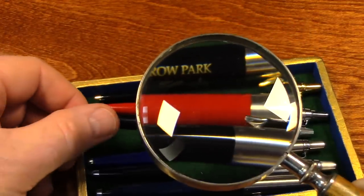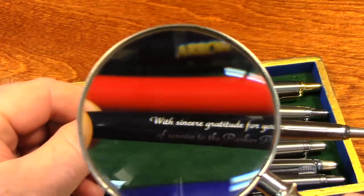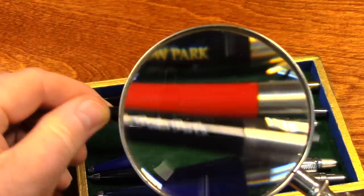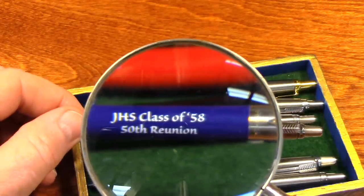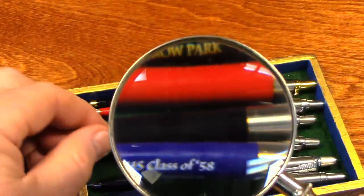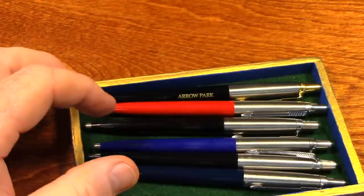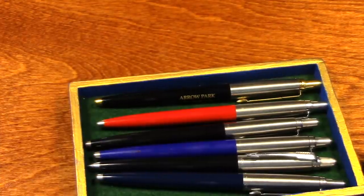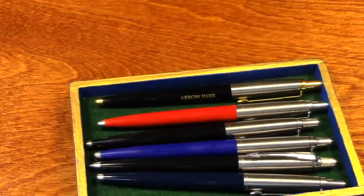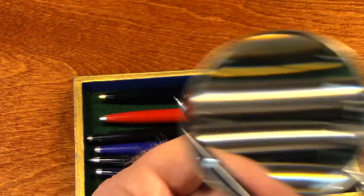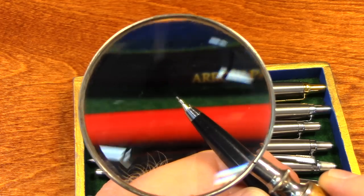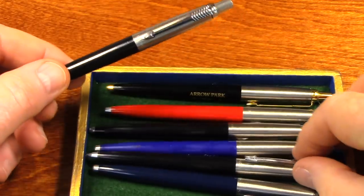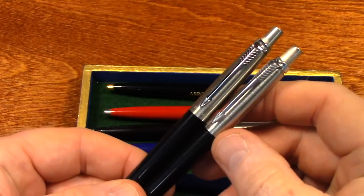A lot of times you would buy a Jotter and it would come with a matching pencil. Look, here's the pencil. You can see that it has the pencil tip on it. So this would be the match for this one. Pen and pencil.